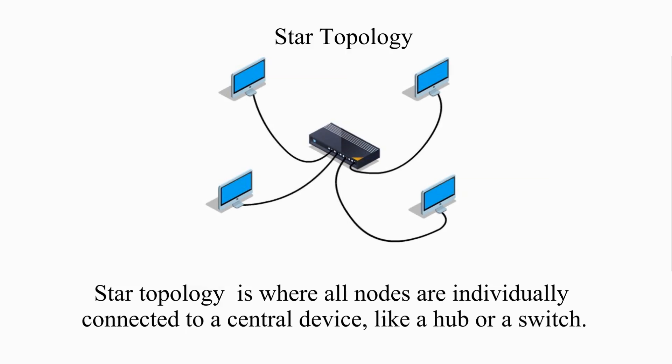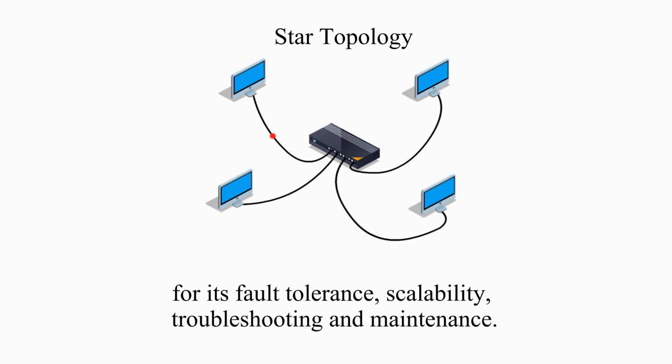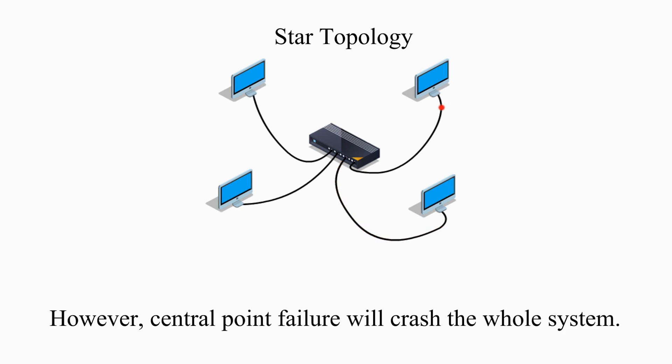Star topology is where all nodes are individually connected to a central device like a hub or a switch. Star topology has benefits over both bus and ring for its fault tolerance, scalability, troubleshooting, and maintenance. However, central point failure will crash the whole system.